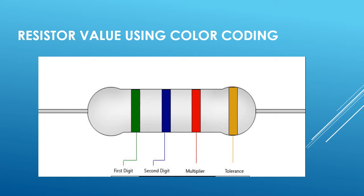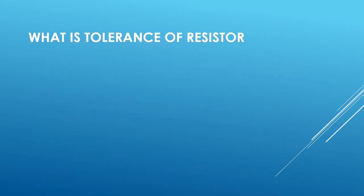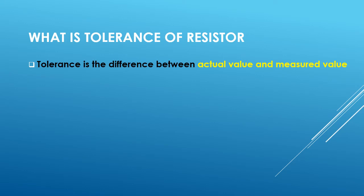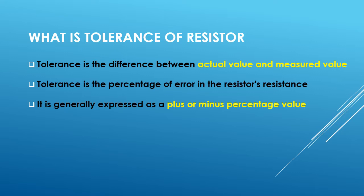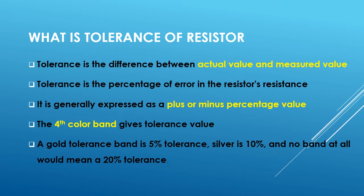Tolerance is the difference between the actual value of the resistor and the measured value. It is the percentage of error in the resistor's resistance, generally expressed as a plus or minus percentage value. The fourth color band gives you the tolerance value in percentage. In general, gold and silver bands are used as tolerance bands — the gold tolerance band is 5% and the silver tolerance band is 10%.